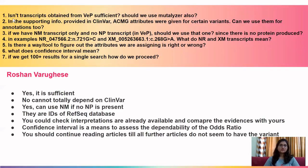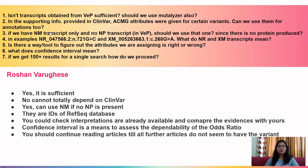The next question is by Roshan. First: are transcripts from VEP sufficient, or should we also use Mutalizer? If VEP results are already available, you do not need Mutalizer. Second: if ClinVar provides ACMG attributes in supporting info, can we use them? No — do not use ACMG attributes from ClinVar directly. You could refer to those papers and assign attributes on your own if convinced, but also do regular searches in Google Scholar, PubMed, PMC, OMIM, and ClinVar, then compare yours with ClinVar results.